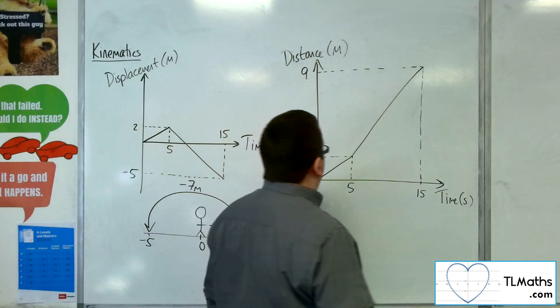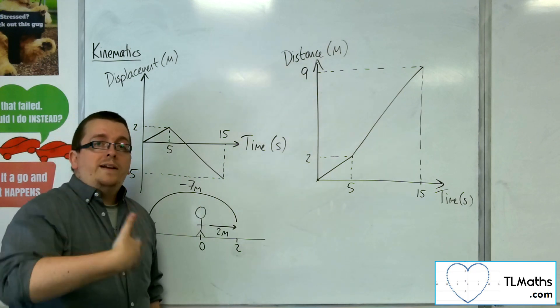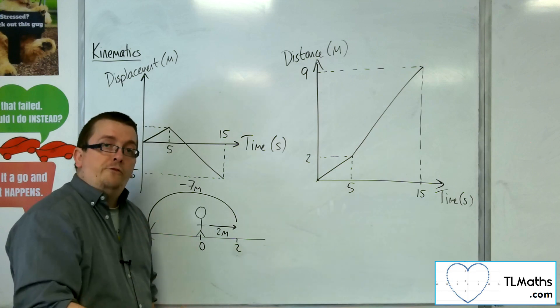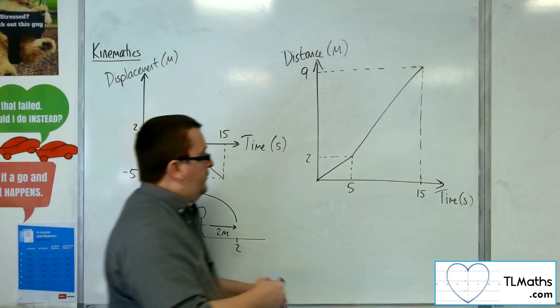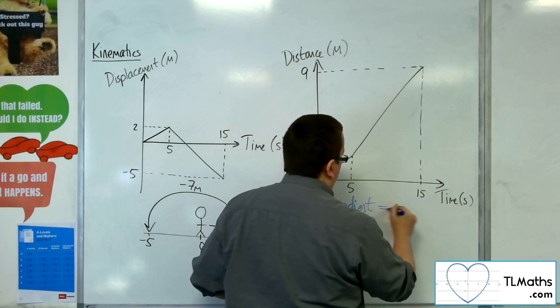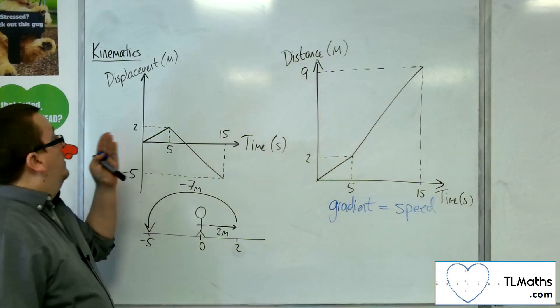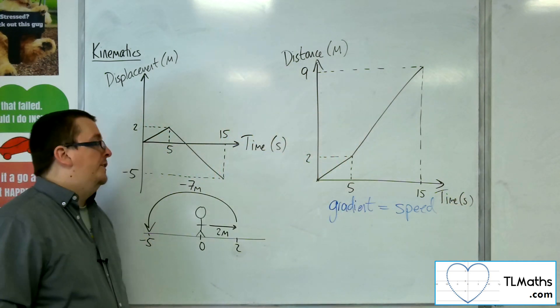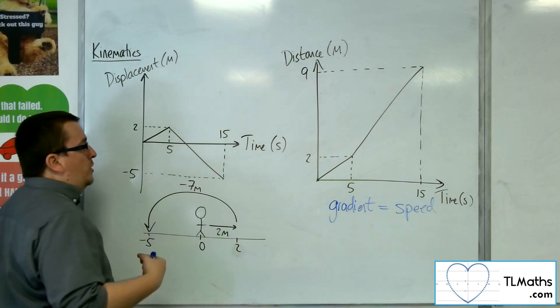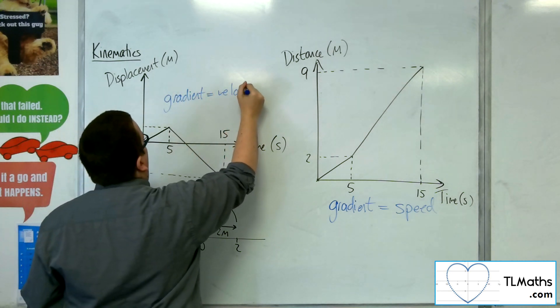Well, for distance time, if you've travelled two metres in five seconds, then you know that you can work out your speed, which would be two-fifths metres per second, or 0.4 metres per second. So, in actual fact, the gradient for a distance time graph will be the particle's speed, whereas for the displacement time graph, because the gradient of these lines could be negative because the particle's travelling in the other direction, the gradient is actually the velocity of the particle.